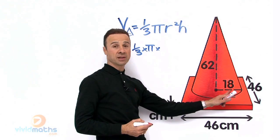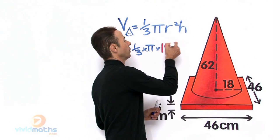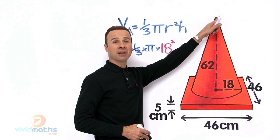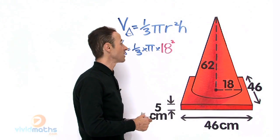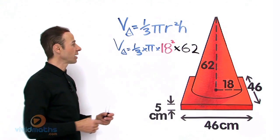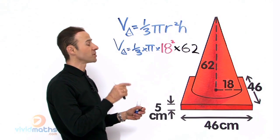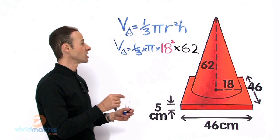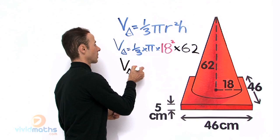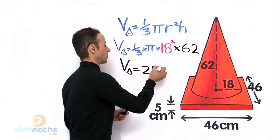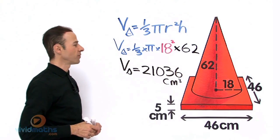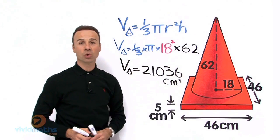The radius is 18 centimeters, and we need to square that because that is what the formula says, times the height, which is 62 — from the apex all the way down to the center of the base. So let us plug that into our calculator: one third times pi times 18 squared times 62. That gives us the volume for the top part — the cone component of this witch hat.